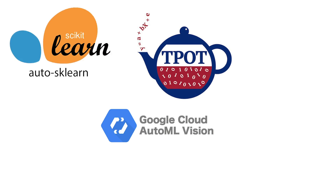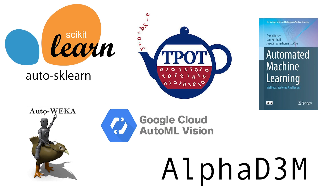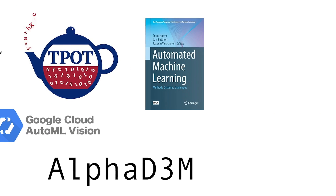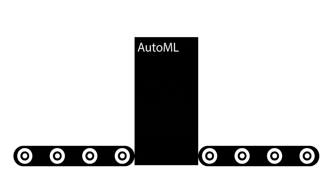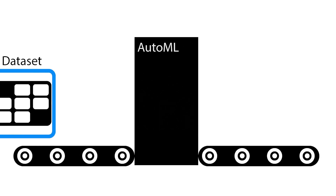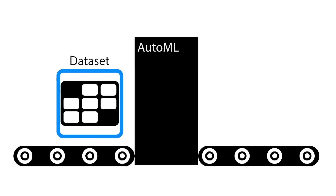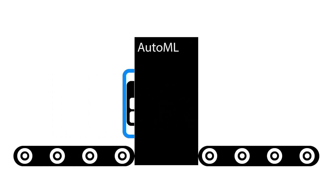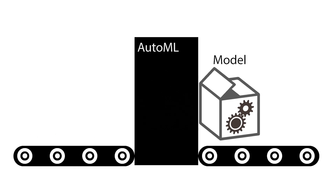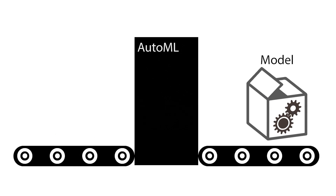With the proliferation of AutoML systems, it's now easier than ever for non-experts to create and deploy end-to-end machine learning pipelines. These systems explore the model search space and optimize hyperparameters in order to solve a particular task.